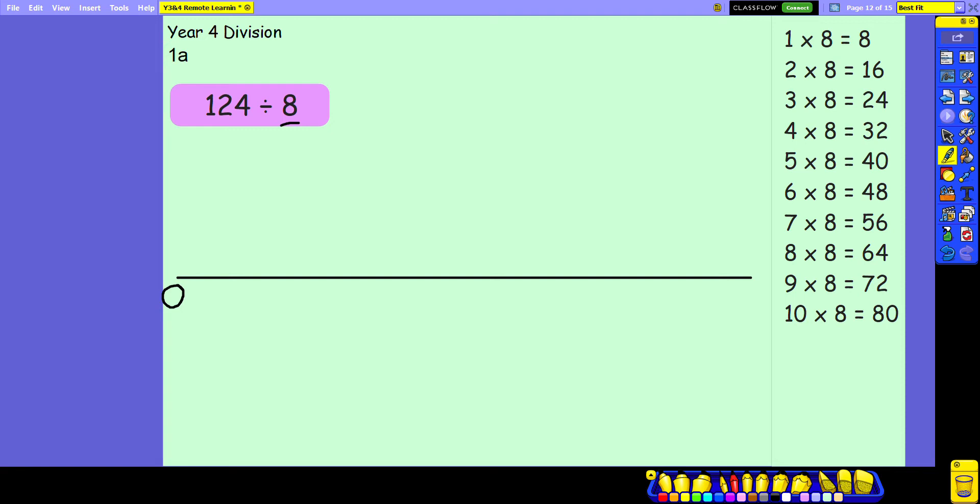So if I'm trying to reach 124 I know that I can jump in one nice large chunk of 80. That's worth noting inside that is 10 lots of 8.